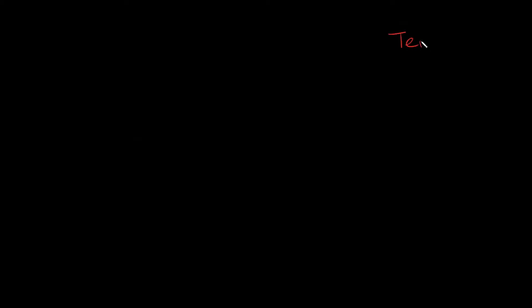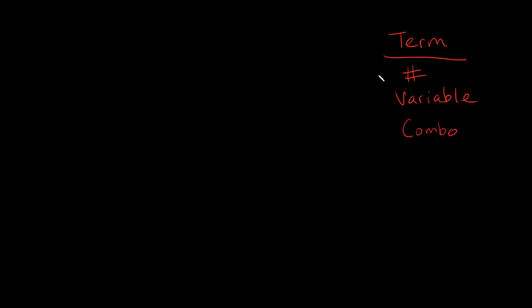Okay, so a term is simply a number, a variable, or a combination of multiplying these two together — so either multiplying numbers together, multiplying variables together, or multiplying numbers and variables together. It's just a combination of multiplying them.